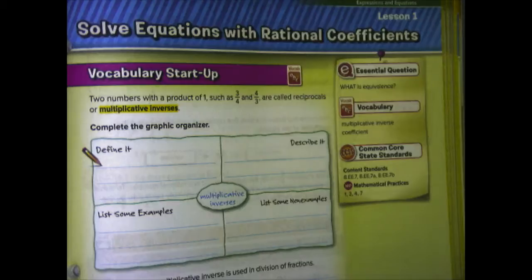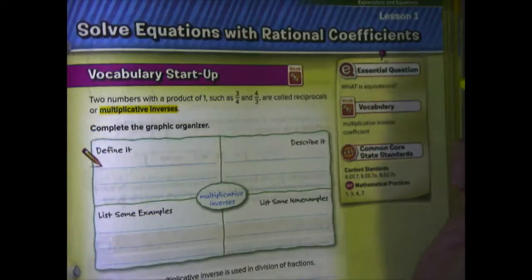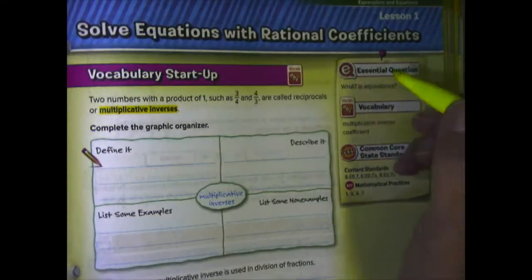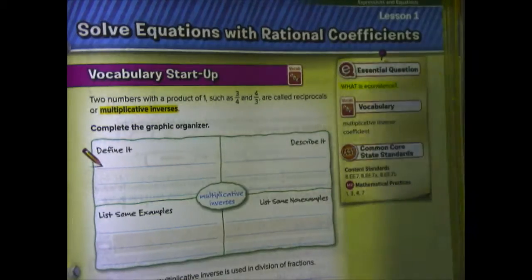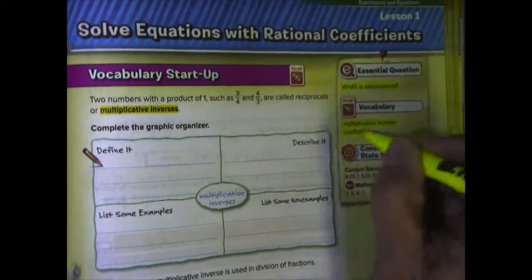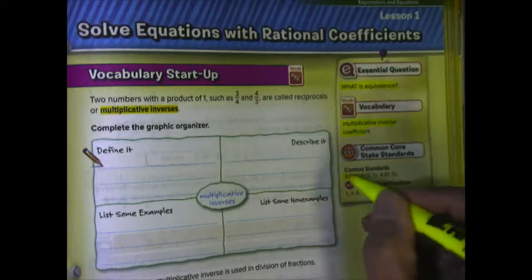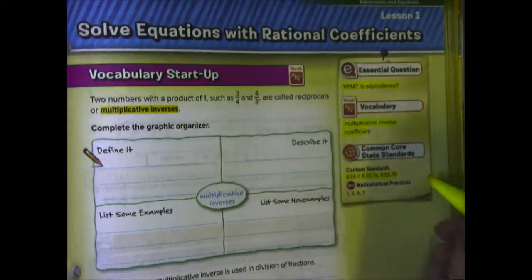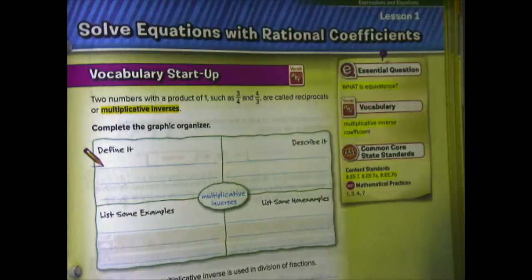You're going to need a highlighter and something to write with. Let's first take a look at our essential question. Because we've changed chapters, our question has also changed. The essential question is: what is equivalence? Our vocabulary for this lesson is multiplicative inverse and coefficient. Our Common Core State Standards are 8.EE.7, 8.EE.7a, and 8.EE.7b, and we'll talk about those in class, along with the mathematical practices.